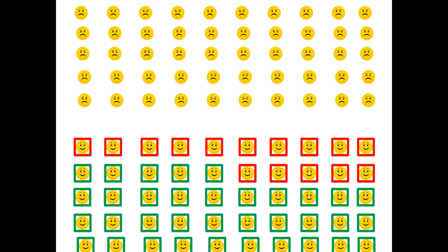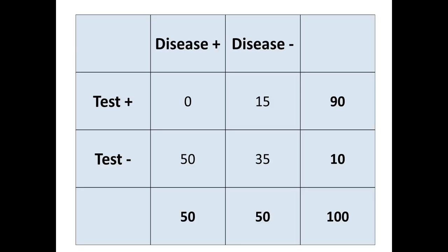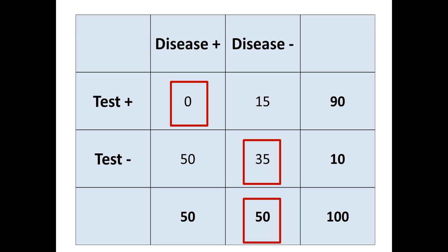Going back to our sample again: on the bottom we had 50 people without the disease — 35 tested negative and 15 tested positive. Now let's say everyone who actually had the disease tested negative. Specificity is still 70%, but sensitivity in that case is zero out of 50, which would be zero. So you always need both sensitivity and specificity when evaluating a diagnostic test. Sensitivity is good for ruling out, and specificity is good for ruling in — we'll cover that in our third tutorial on SnNout and SpPin.